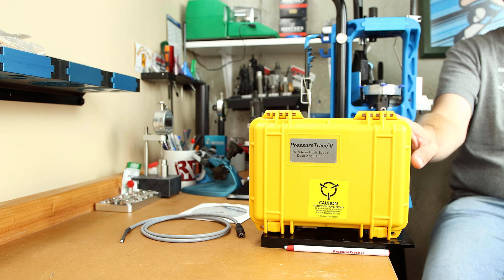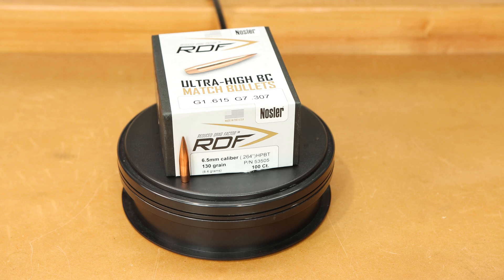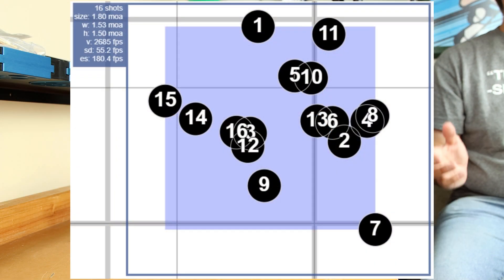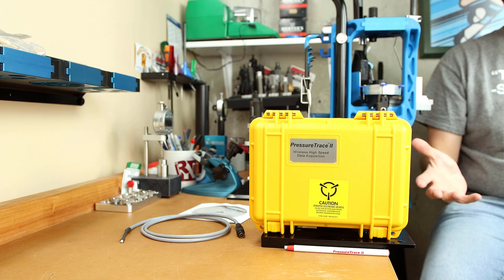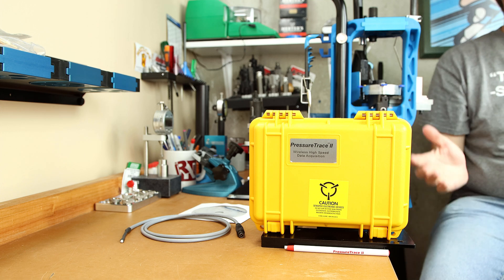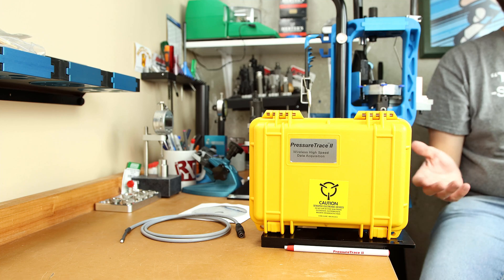Let's see what this little box can do though. Today's test is going to be on 6.5 Creedmoor, and we're using the 130 grain Nosler RDF. These haven't worked very well for me in the past, and they continue to disappoint as far as group size is concerned today as well. But we're really not talking about group size. We're talking about pressure, and they're going to work perfectly to show exactly how this thing works.